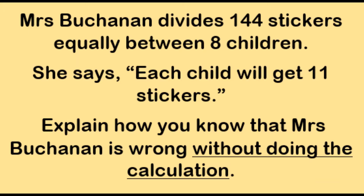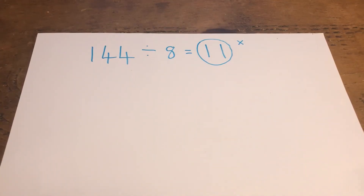I've got another example to show you, which will help you to answer this question. Mrs. Buchanan divides 144 stickers equally between eight children. She says each child will get 11 stickers. Explain how you know that Mrs. Buchanan is wrong without doing the calculation. Let's see how we can prove that 144 divided by eight is not 11 — but we're not going to do the calculation. I'm going to prove it in two ways.